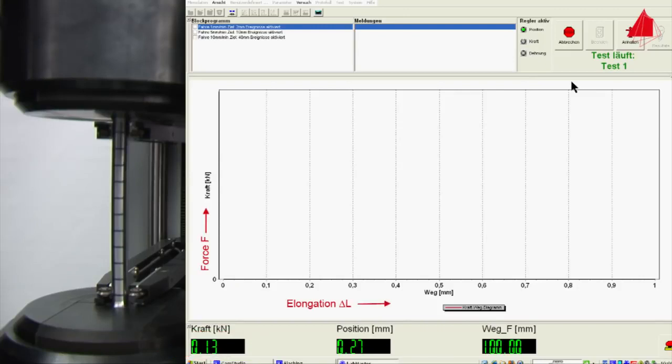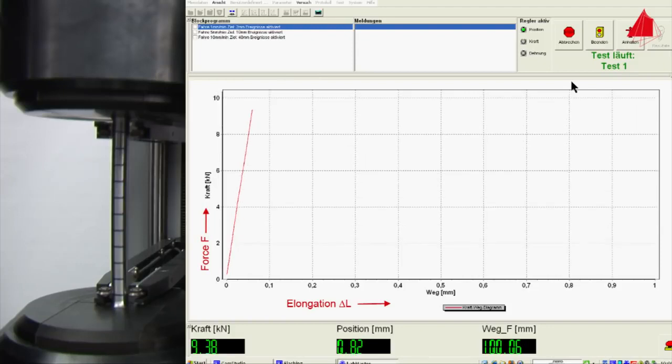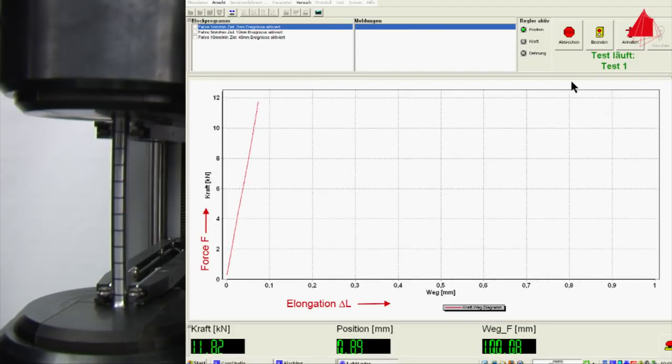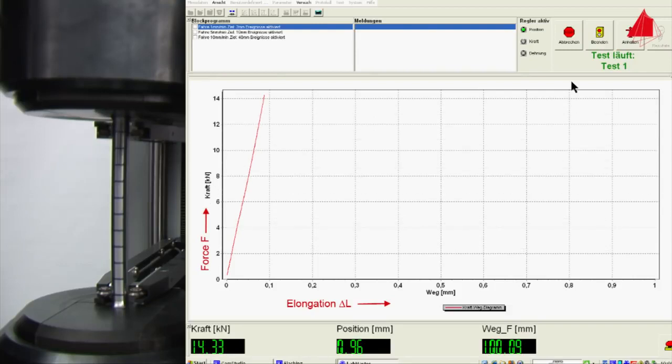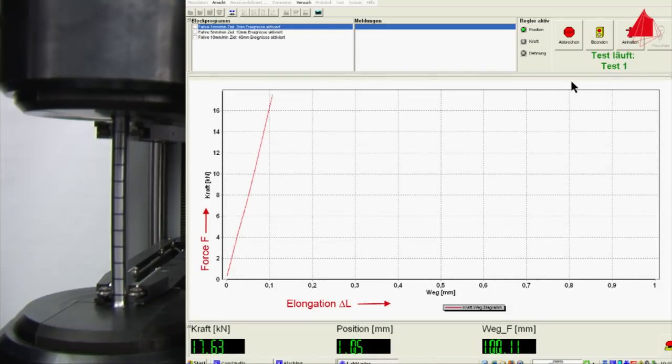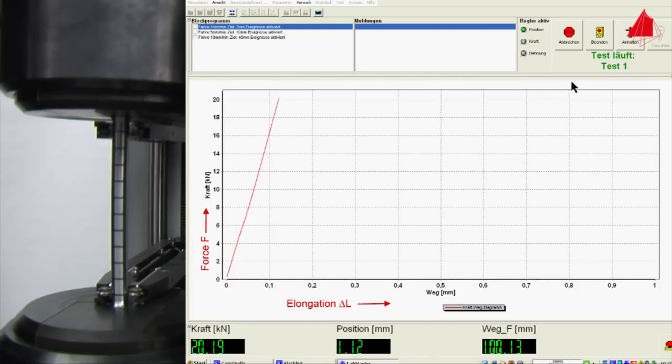The material behavior can best be observed in a force-elongation diagram. The force F is being plotted upwards on the vertical axis, the elongation delta L towards the right on the horizontal axis. At first the force rises rapidly. Force and elongation are proportionate and form a steep straight line in the diagram. In this area the material behaves elastically. If the test piece were to be unloaded from this area, it would spring back completely to its original length.